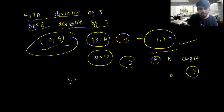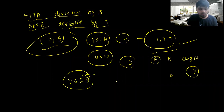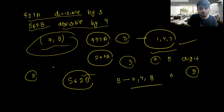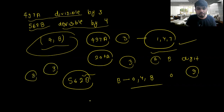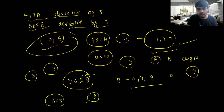If 562b is divisible by 4, then the last two digits must be divisible by 4. So the possible values of b are 0, 4, and 8 — that's 3 values. Since a can take 3 values and b can take 3 values, the number of ordered pairs is 3 × 3 = 9.